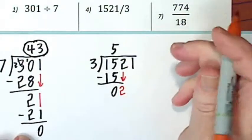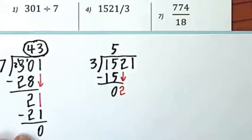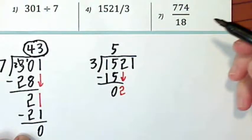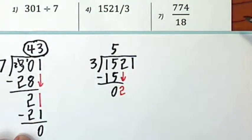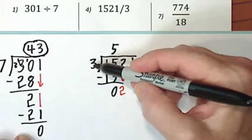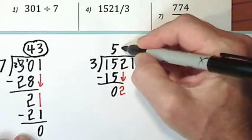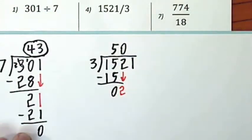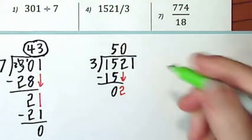Every time you bring down a digit, you have to ask and answer the question. How many times does three go into two? Zero times. Now you bring down the next digit.